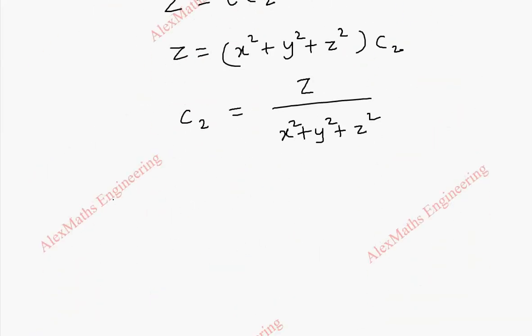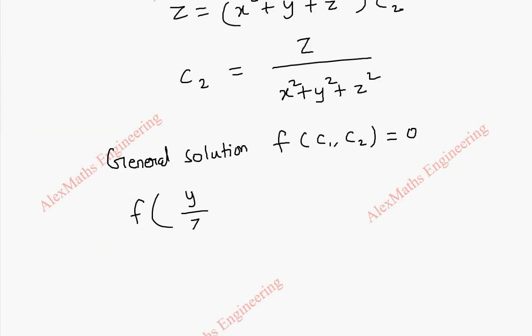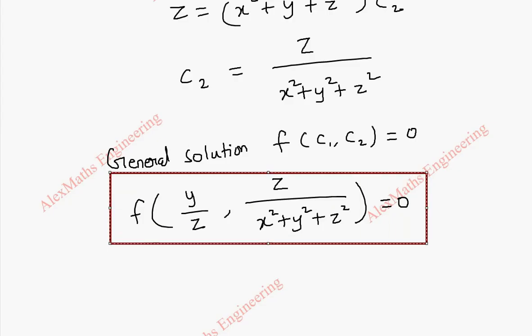Now using c1 and c2, let's write the general solution. So now the general solution is f of c1 comma c2 equal to 0. So f of c1 is y by z, so y by z comma this is z by x squared plus y squared plus z squared equal to 0. So this is our general solution for the given partial differential equation using the Lagrange's multiplier method.